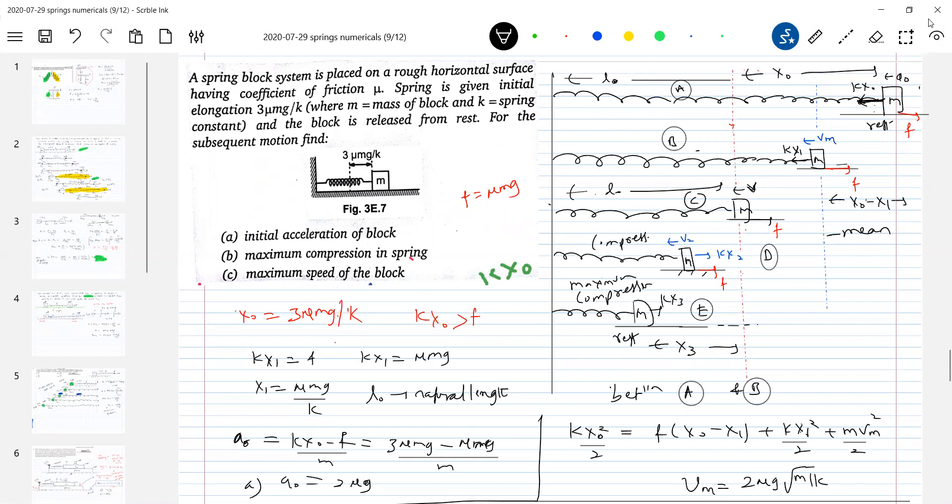Can you go back to basics? At maximum, here, spring block system. At extreme points, what should be the state of the block? Should be at rest. At mean position, should have maximum velocity.